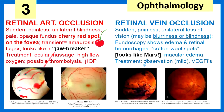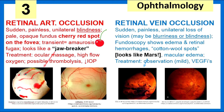Retinal artery and retinal vein occlusion. Retinal artery occlusion presents as sudden, painless, unilateral blindness with a pale opaque fundus and a cherry red spot on the fovea. When transient, it's known as amaurosis fugax. We treat this condition with ocular massage, high-flow oxygen, possible thrombolysis, and we try to decrease intraocular pressure.